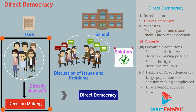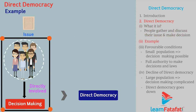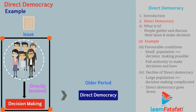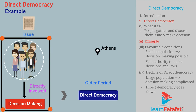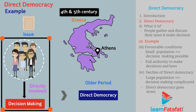For example, such type of democracy was present in the older period — in Athens, the capital city of Greece, during the 4th and 5th century.